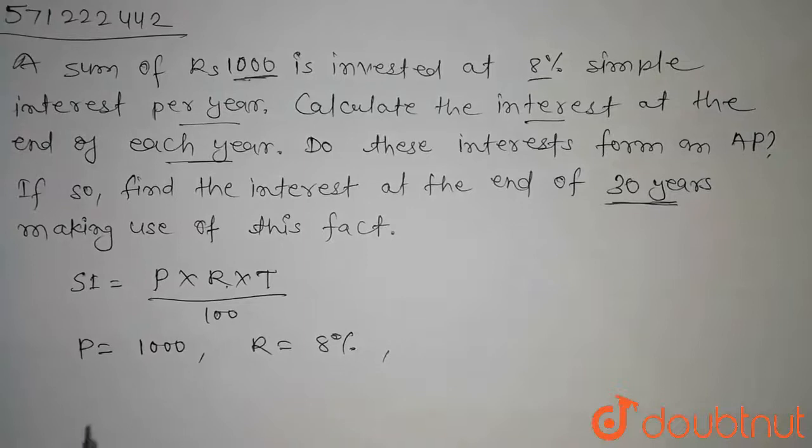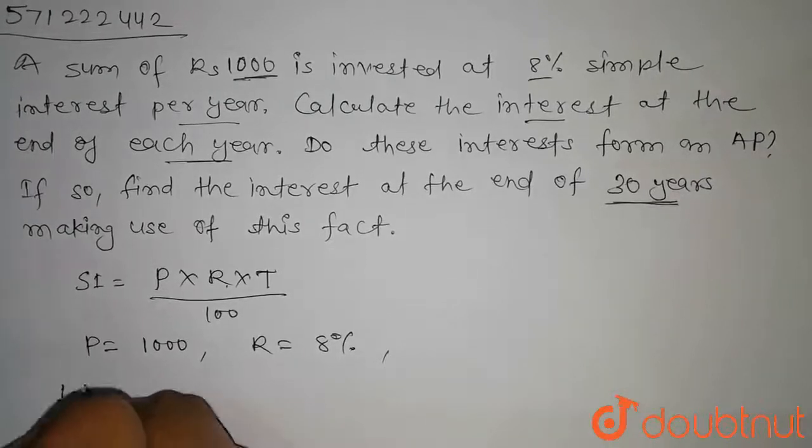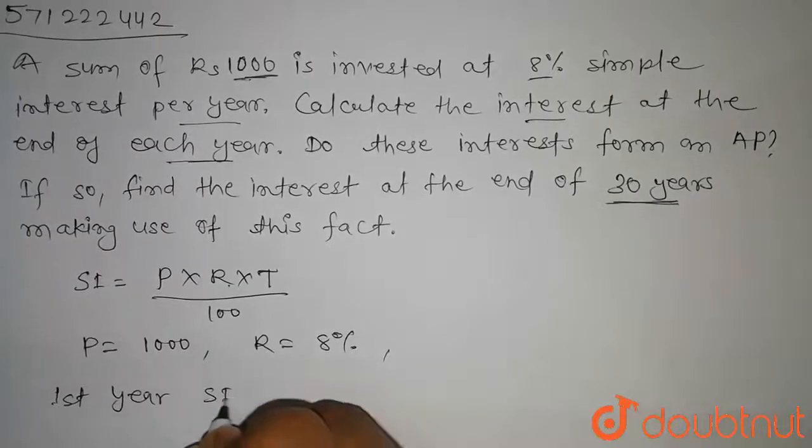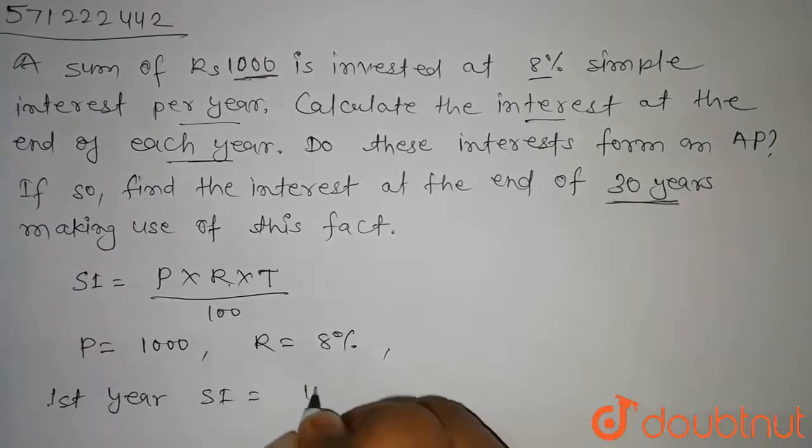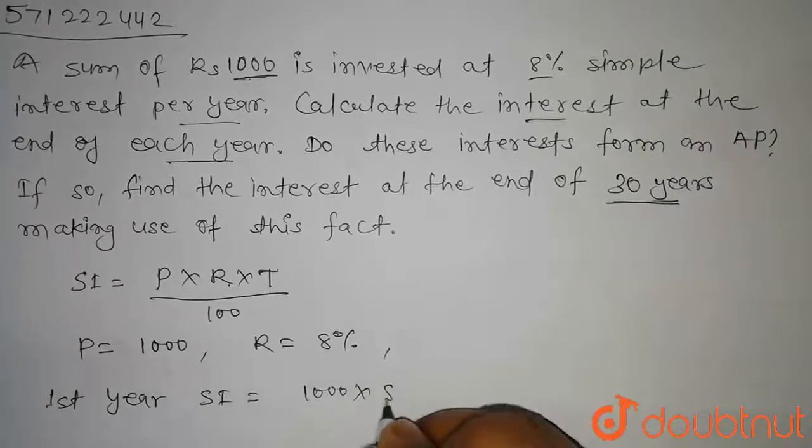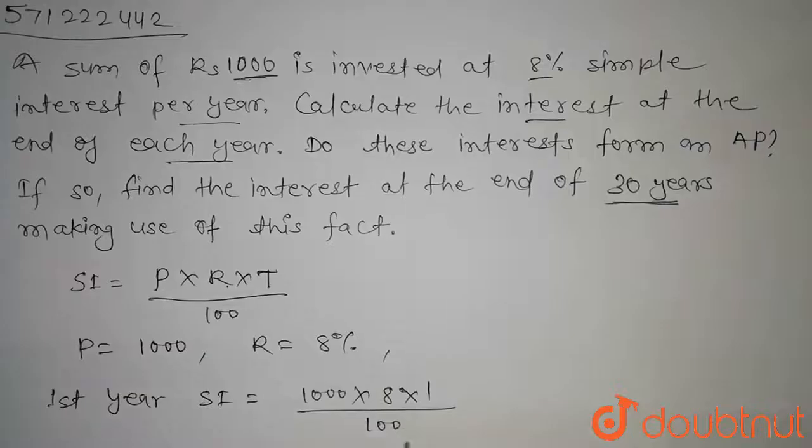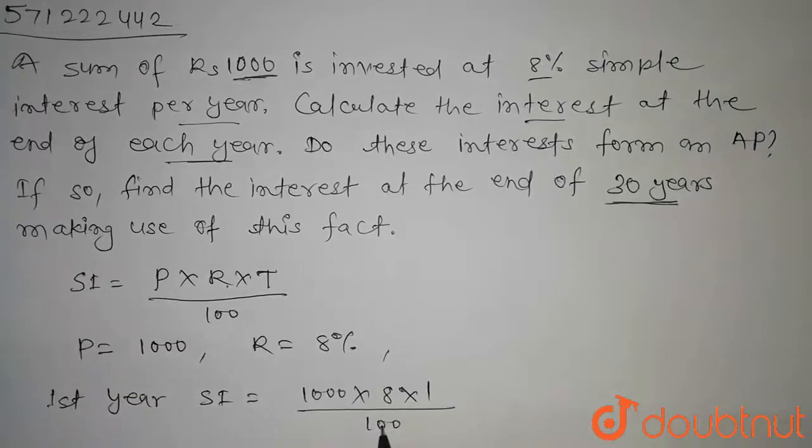Now for the first year, SI will be equal to 1000 into 8 into 1 upon 100, and on solving this we get 80.